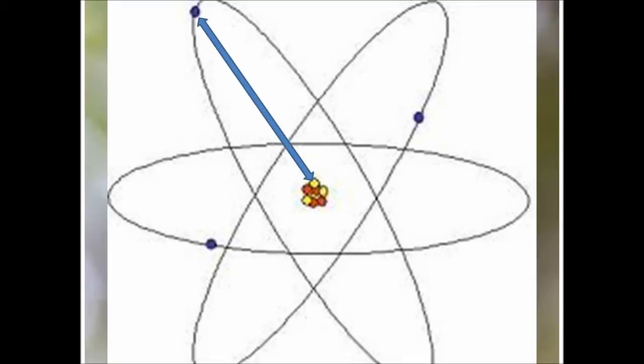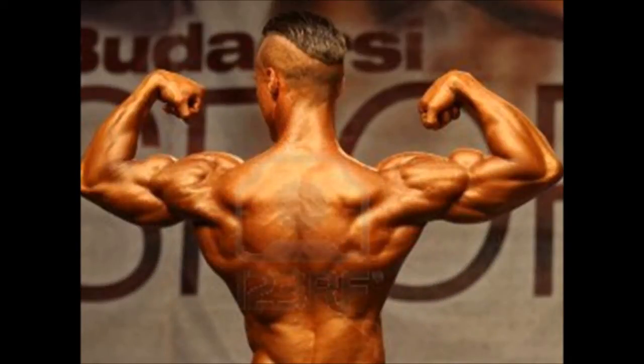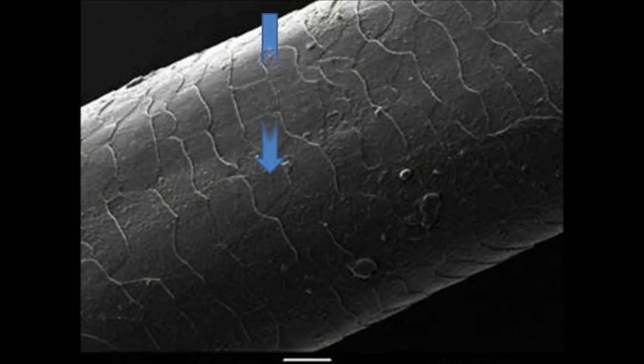If we remove the spaces between the nucleus and the electrons, then this muscle man will be the size of a very small droplet placed on a human hair as seen under the microscope.